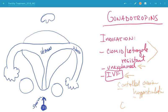Controlled ovarian hyperstimulation or COH. In this scenario, essentially what you're doing is giving these drugs, one or both, exogenously and they're acting directly on the ovary.